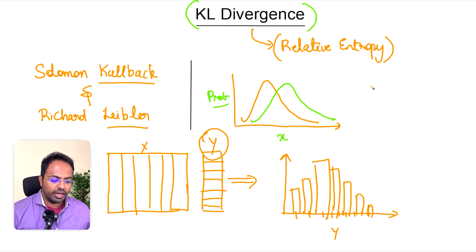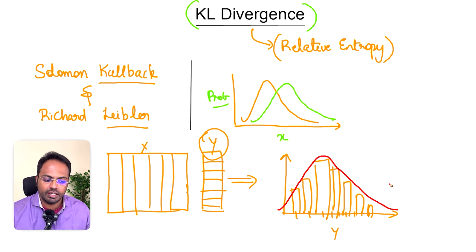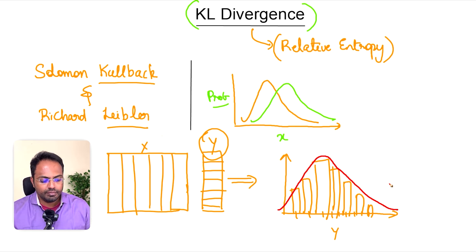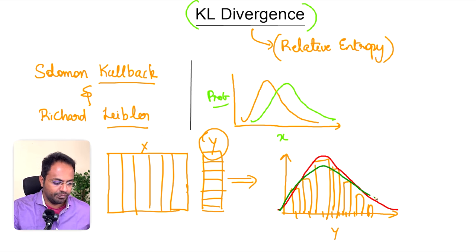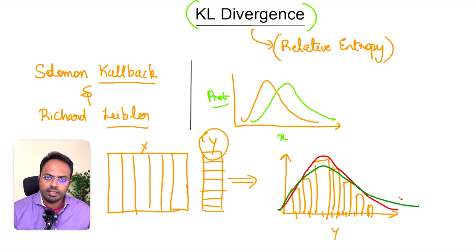We often assume that this target might follow a normal distribution, and we draw a curve over the histogram. You can visually see it follows a normal distribution. But is there a way to quantify this? What if there was another distribution — a gamma distribution or a different version of a normal distribution — that fits this data even better? This is where KL divergence comes in.